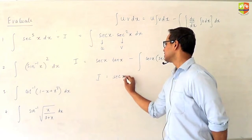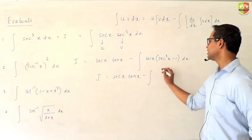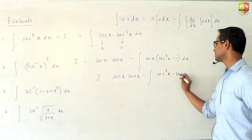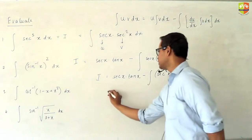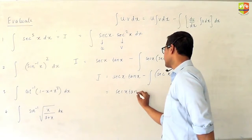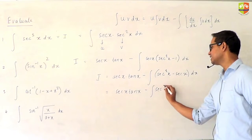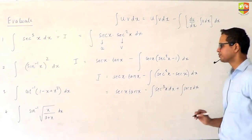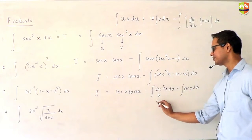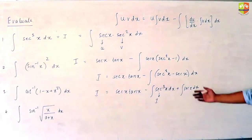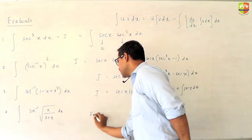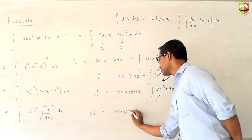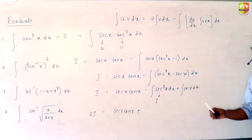When you open the brackets here, you get sec³x minus sec x. You can write it as sec x·tan x minus the integral of sec³x plus the integral of sec x. Now, this integral of sec³x is again I. So let the two I's come together: I plus I becomes 2I.